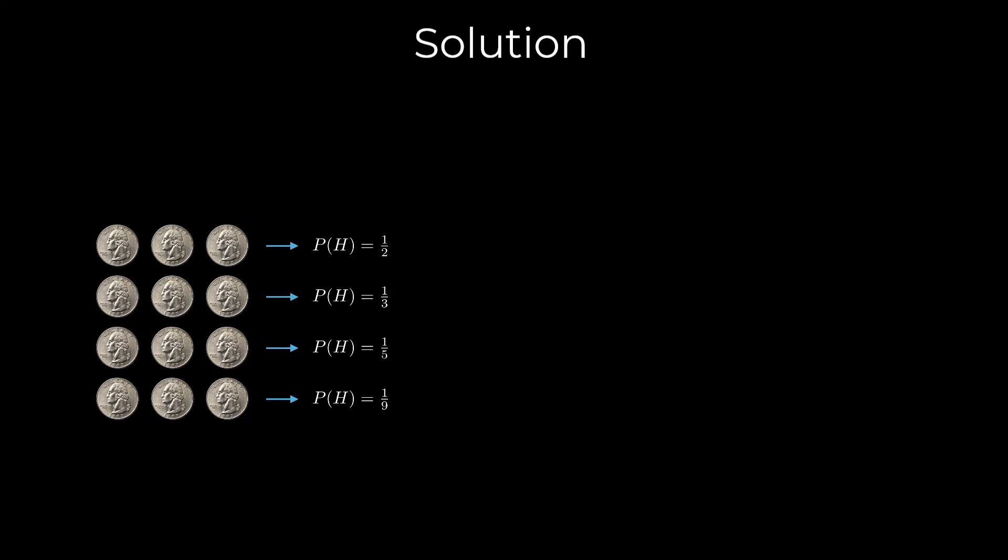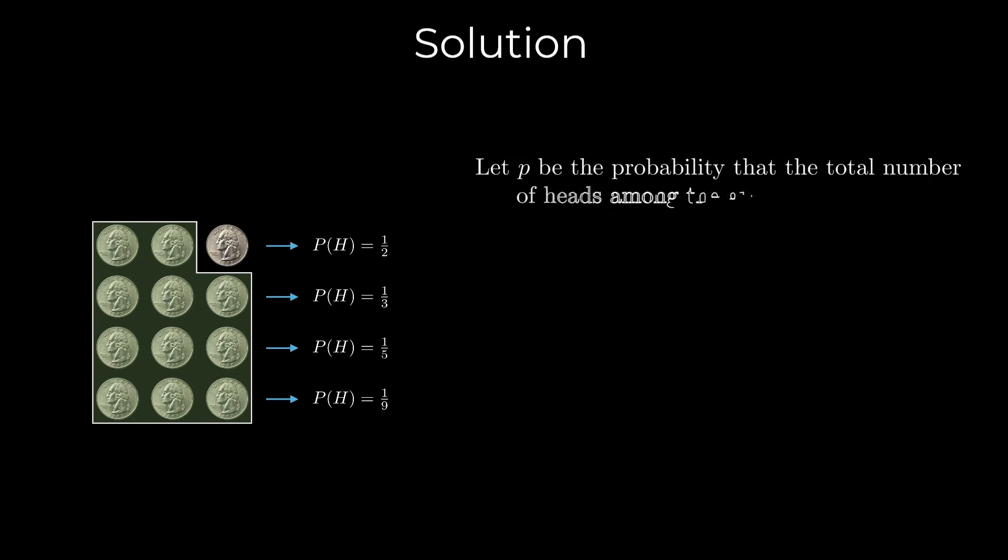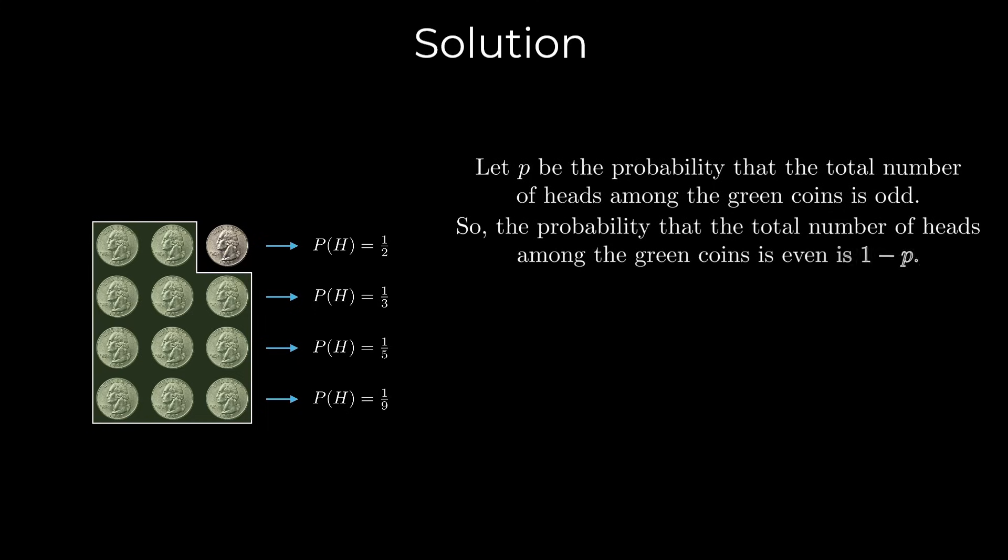Here's the solution. Let's set aside the top right fair coin and call the remaining 11 coins the green coins. Let P be the probability that the total number of heads among the green coins is odd. So the probability that the total number of heads among the green coins is even is 1 minus P.